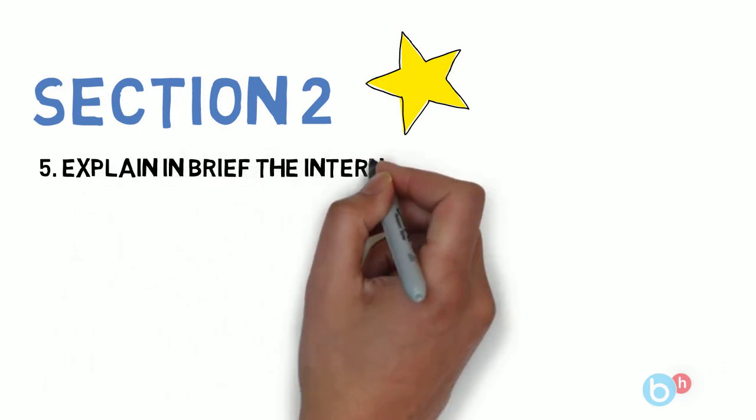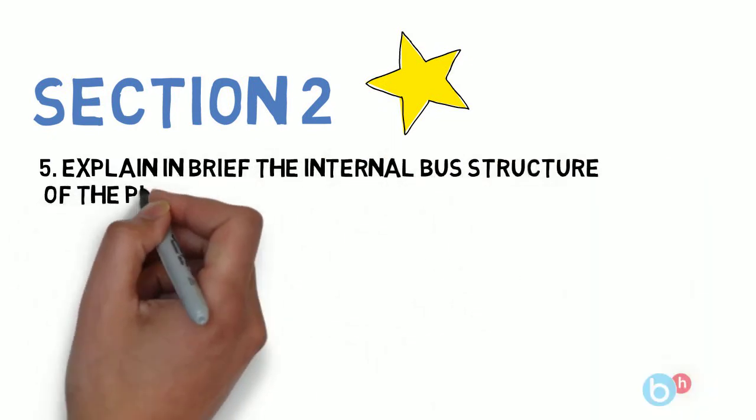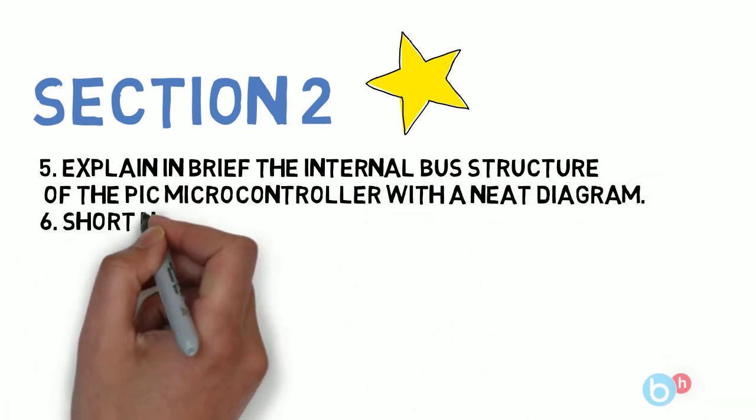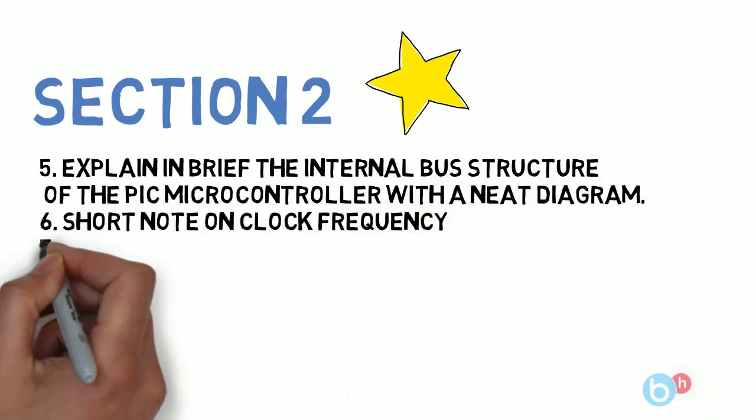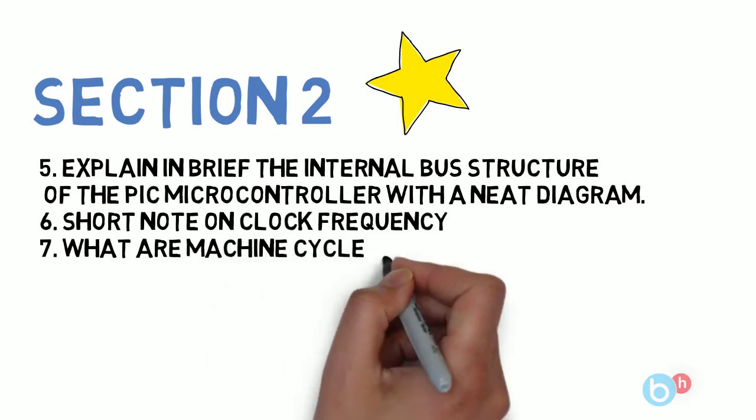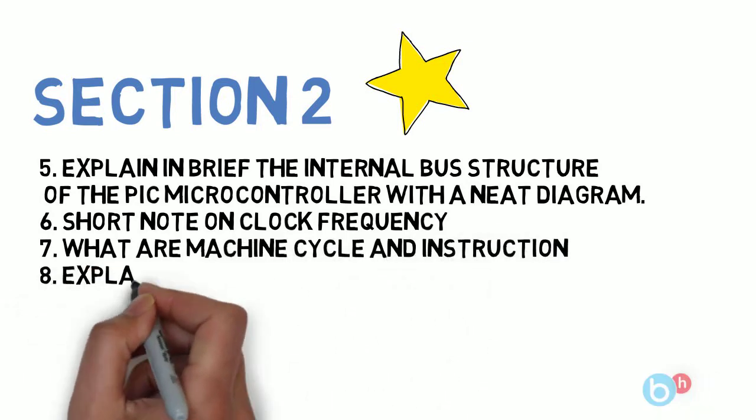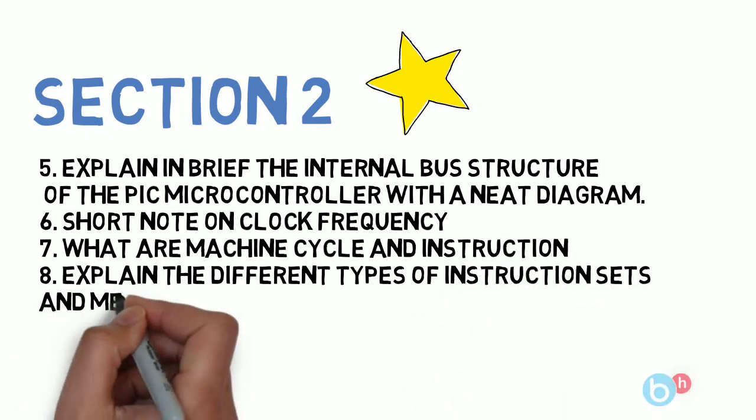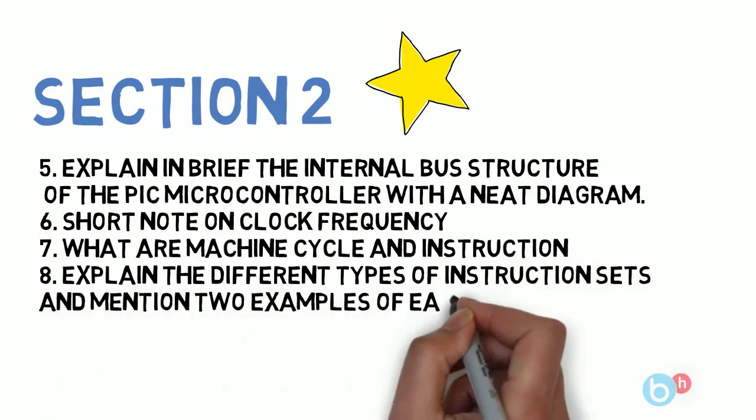Let's go to Section 2, wherein the first is explain in brief the internal bus structure of PIC controller with a neat diagram. Next is short note on clock frequency. Next is what are machine cycles and instructions. And the last one is explain the different types of instruction set and mention 2 examples for each set.